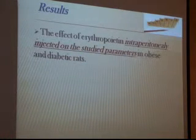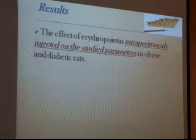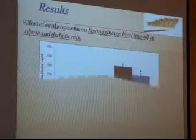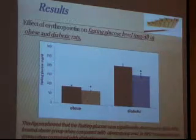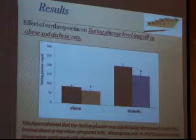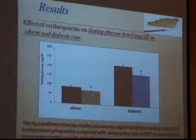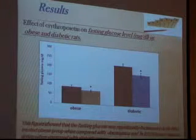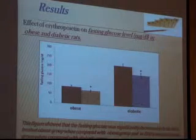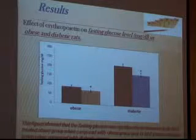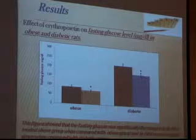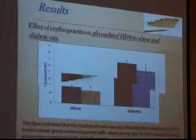Results: The effect of intraperitoneally injected erythropoietin on metabolic parameters in obese and diabetic rats. Regarding fasting glucose level, this figure shows that fasting glucose was significantly decreased in both the erythropoietin-treated obese group compared with the obese group and the erythropoietin-treated diabetic group compared with the diabetic group.